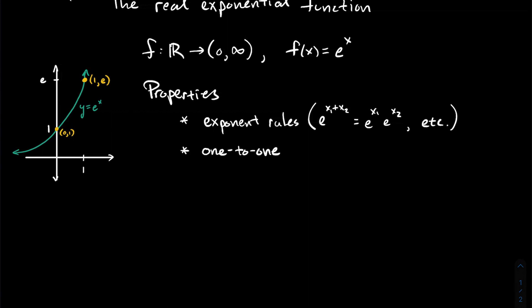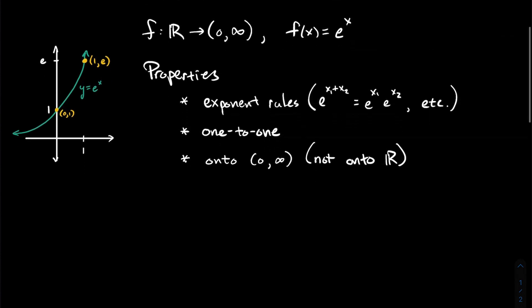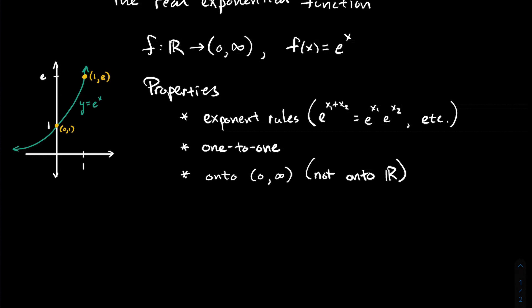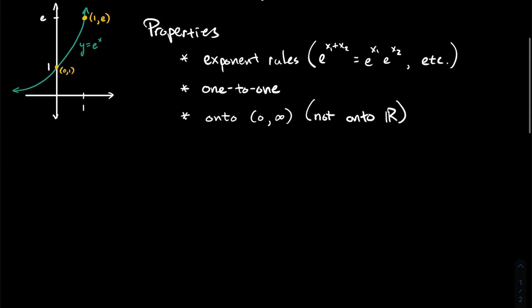The next property is that this function is one-to-one. The next property is that it is onto the interval (0, ∞) — not onto all the real numbers. The exponential from ℝ to (0, ∞) is a bijection; there are just as many real numbers from 0 to infinity as there are total real numbers. So these two sets have the same cardinality, as the exponential demonstrates.